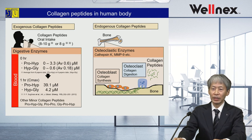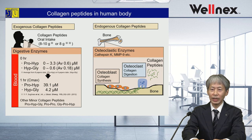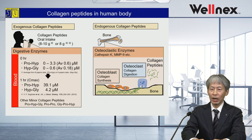For example, in bone tissue, collagen is synthesized by osteoblasts and degraded by osteoclasts using proteases such as cathepsin K and matrix metalloproteinase. Collagen peptides are produced by osteoclasts in bone tissues. Moreover, we predict that the collagen peptide produced by osteoclasts is one of the bone coupling factors. Bone coupling factors are thought to be bone metabolism regulators.